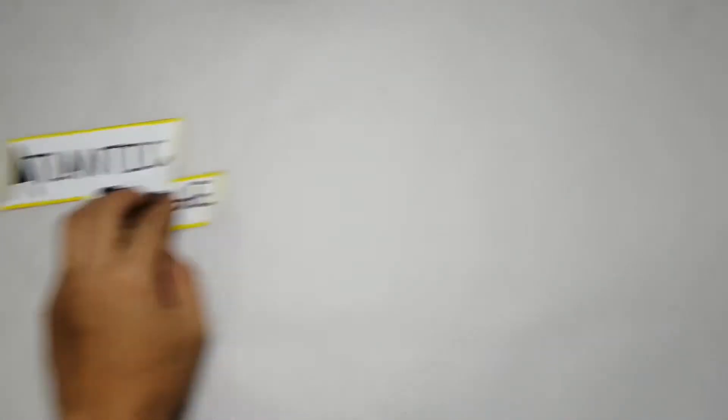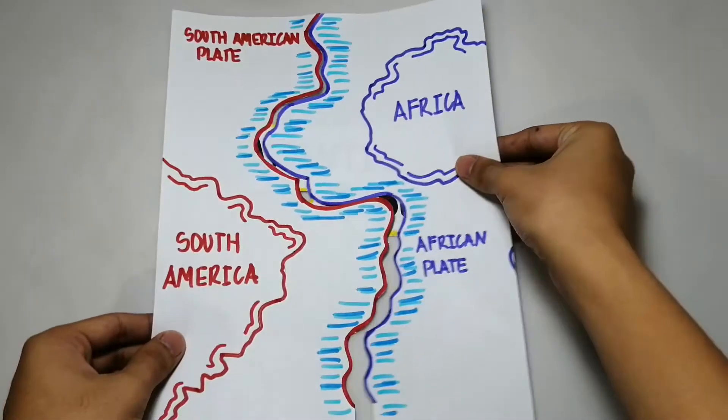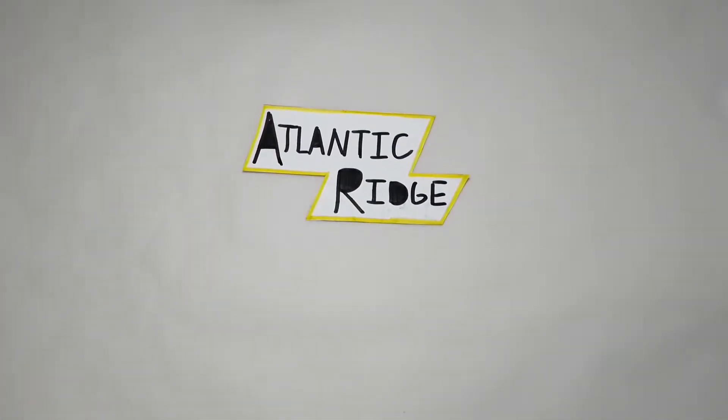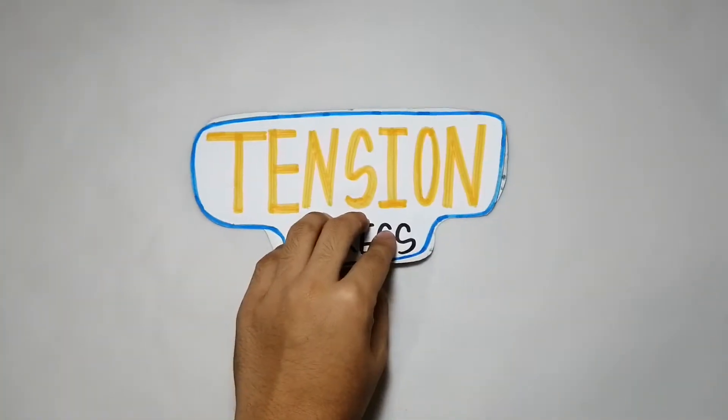Another example is the Atlantic Range, where the Eurasian plate together with the African plate constantly breaks off with the North and South American plates. In this scenario, another type of stress is observed, the tension stress.